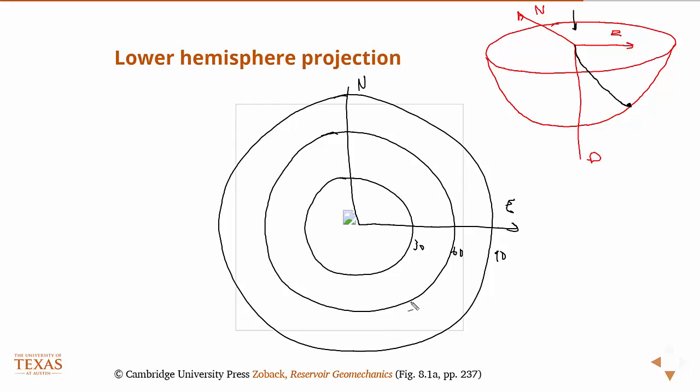We can then plot, in this case, this is, you know, let's say the angle of this is 60 degrees and it's right under the east direction. Then this point would be right here.